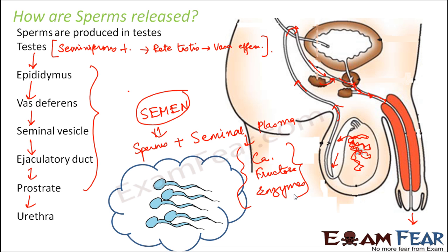So now we understand the process of spermatogenesis — how the sperms were produced. The sperms move through the entire vas deferens; the seminal vesicles and other glands pour in their content, and finally the fluid is thrown out through the urethra of the penis. This is how sperms are released.